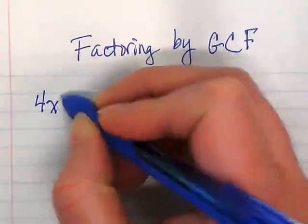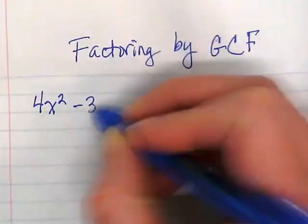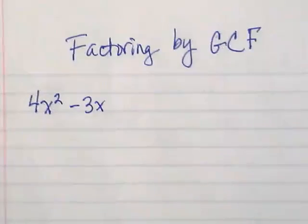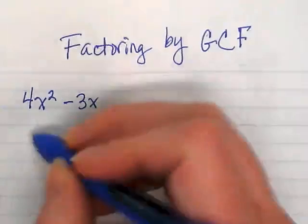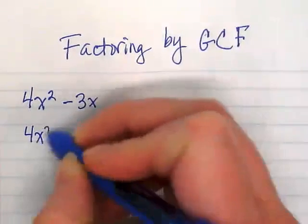First example is 4x squared minus 3x. The first thing that we're going to do with this is factor each term.